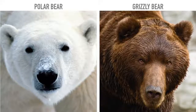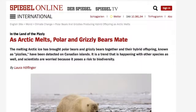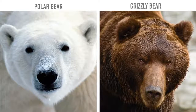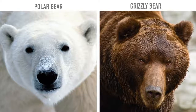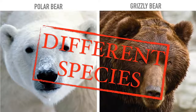Here we have a polar bear and a grizzly bear. What a lot of people don't realize is that polar bears and grizzly bears can actually mate and produce fertile offspring. Do you think they're A, a separate species, B, a separate subspecies, or C, a social construct? They're actually a different species.